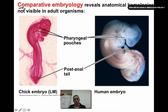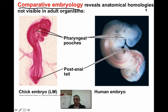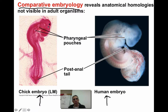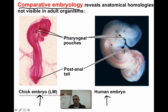A third area of evidence is comparative embryology, which reveals anatomical homologies that may not be visible in the adult organism. They've compared a chick embryo with a human embryo. Both have structures called pharyngeal pouches — visible in the chick embryo here and in the human embryo here. The key idea is that we have two very different organisms, but early on in development these particular structures are present in both, indicating some sort of relatedness between them.